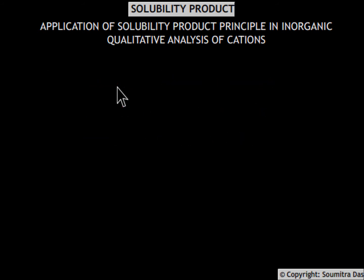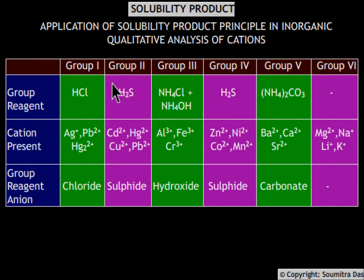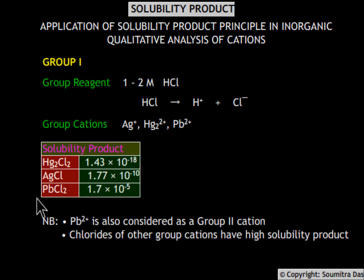In inorganic qualitative analysis, the cations are divided into 6 groups — do not confuse these with the groups of the periodic table. These groups are based on the solubility product of the cation with the anion of the reagent used to analyze that particular group. The reagent used in Group 1 is 1 to 2 molar HCl. By adding HCl, we increase the Cl⁻ concentration, which causes the solubility product of Group 1 cations to be exceeded and they get precipitated.